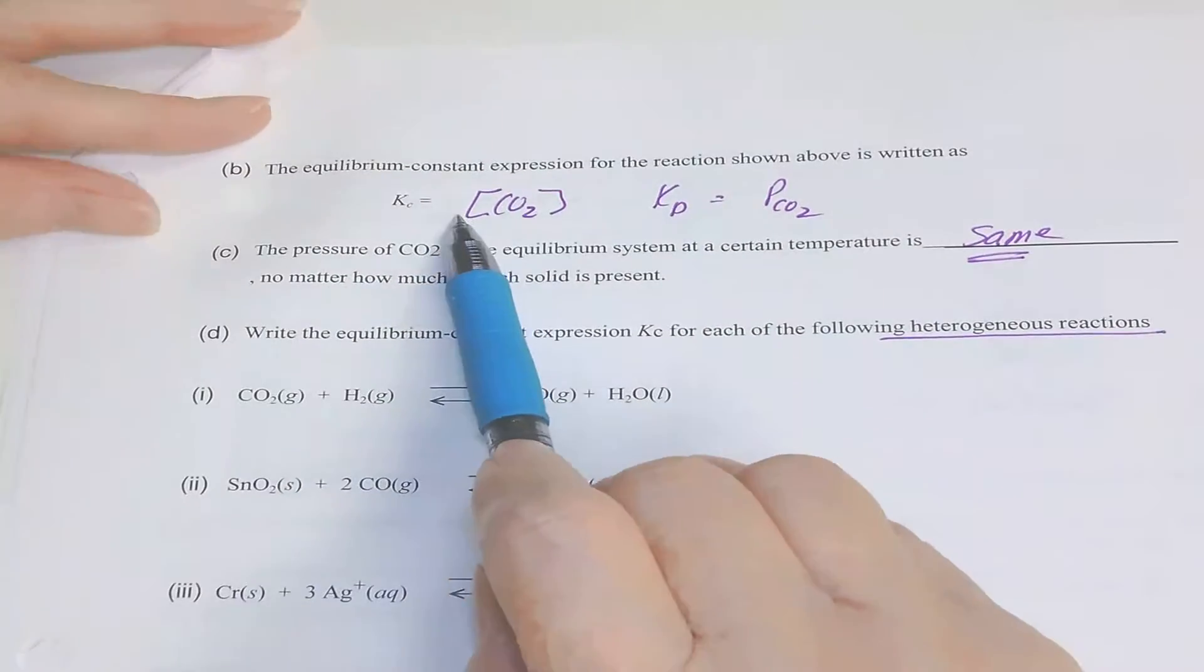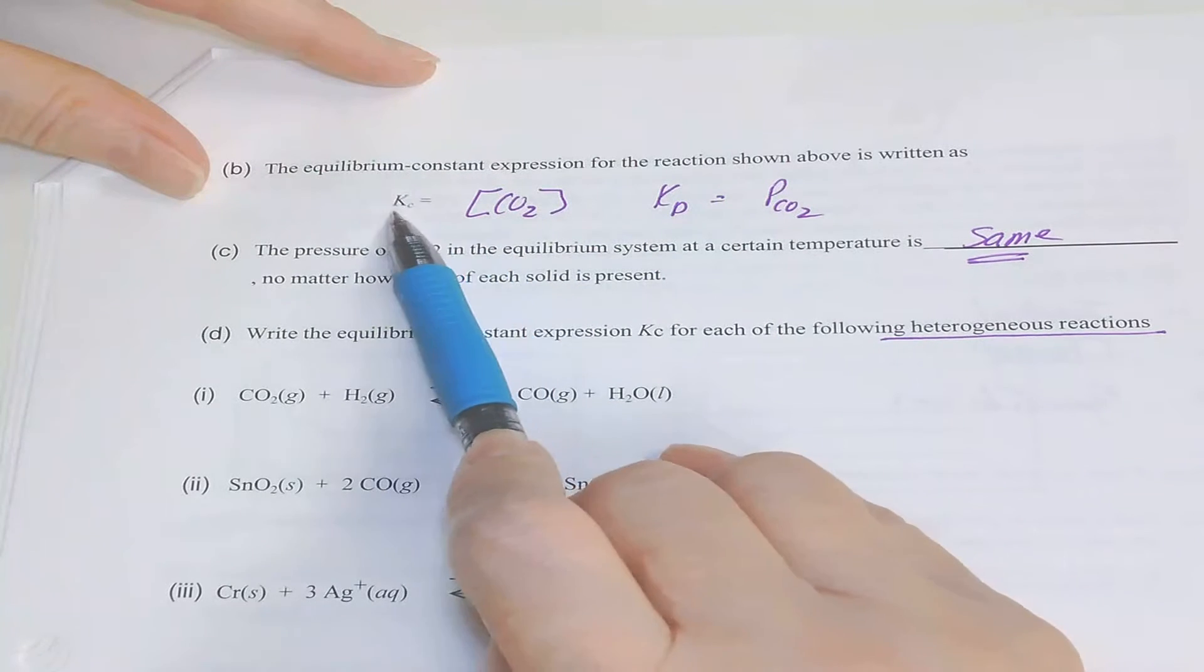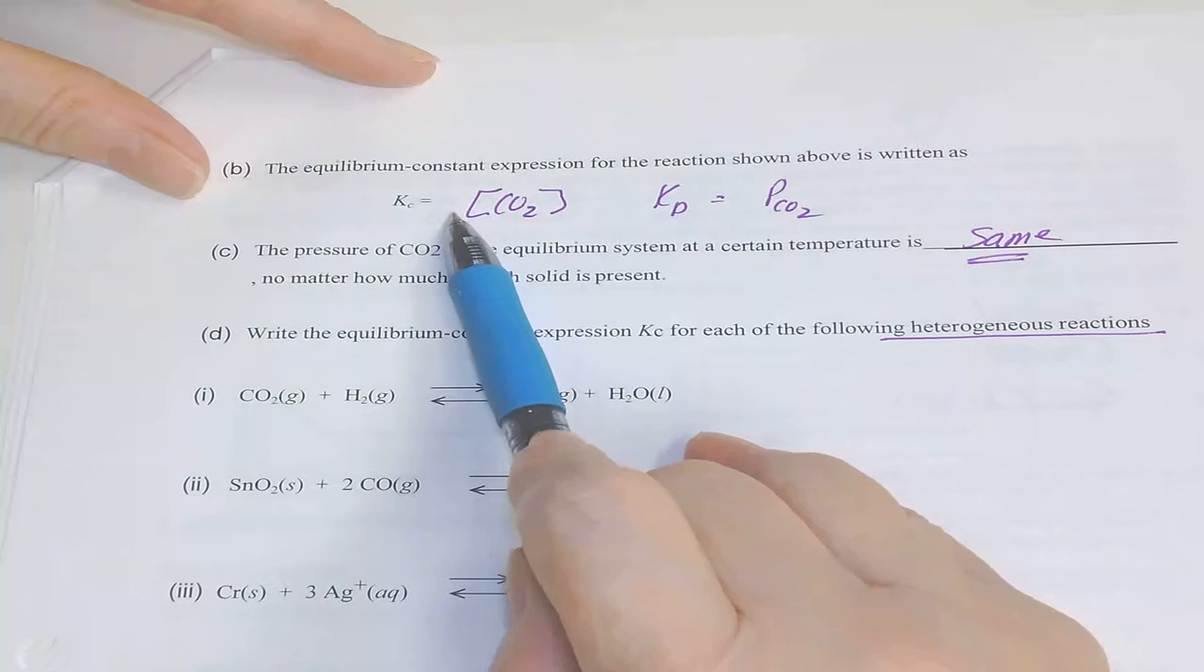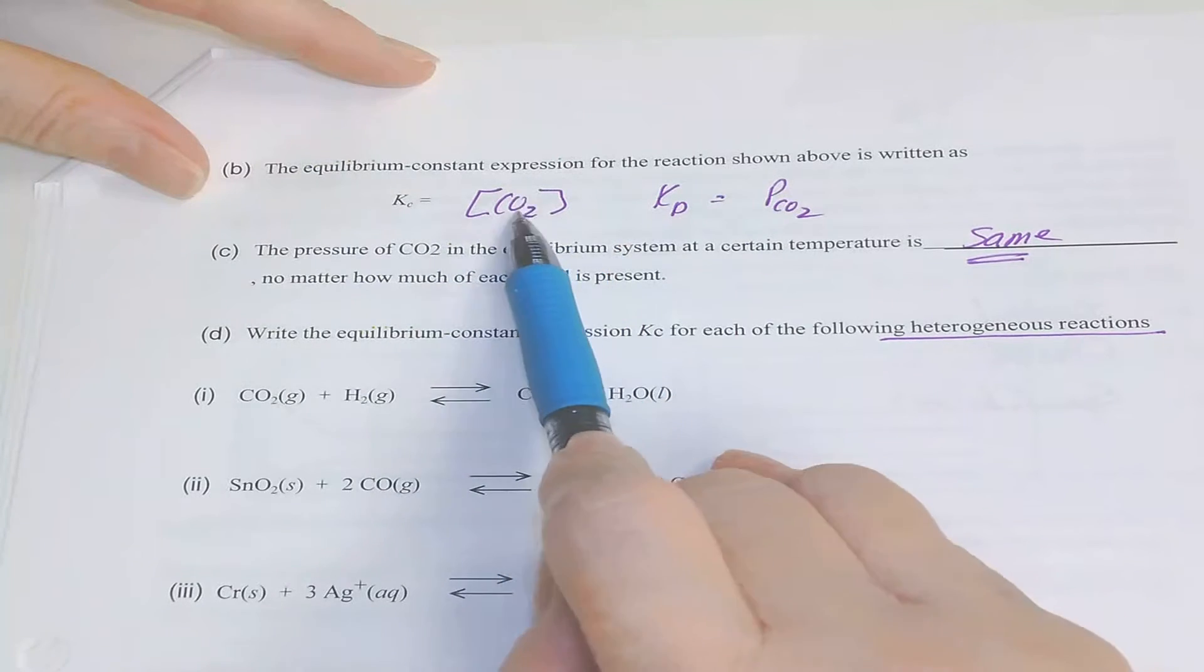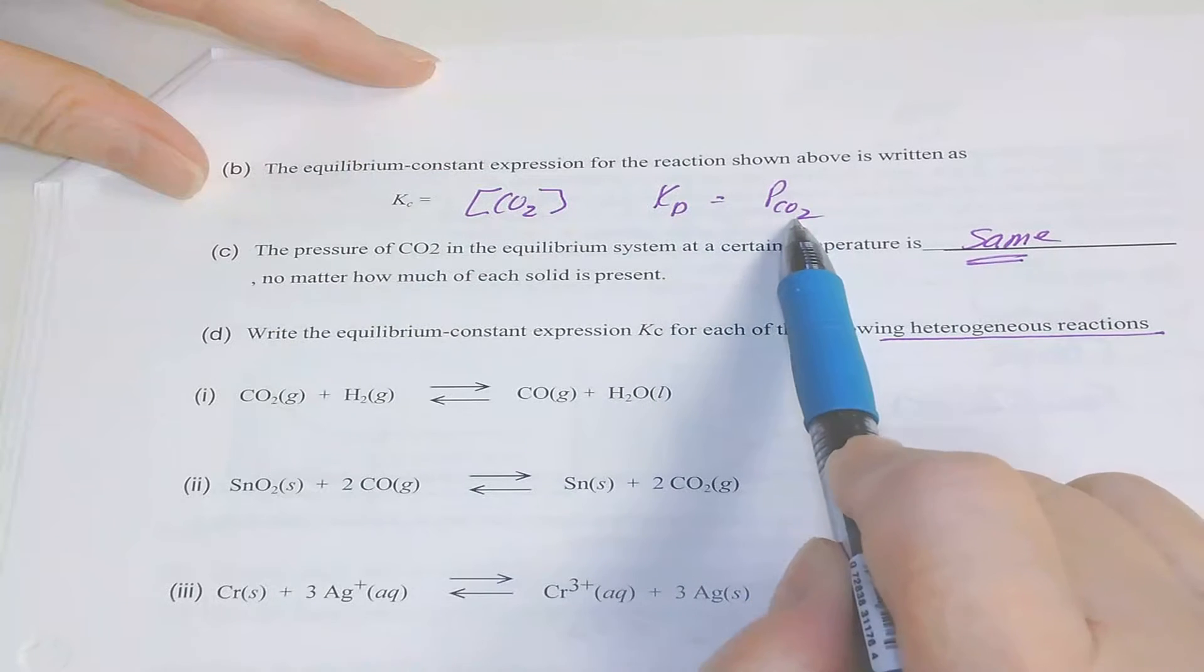When you write a KP expression, it differs from a KC or KEQ in that instead of writing brackets, which always mean molarity, you simply write the symbol for pressure, just a large P.